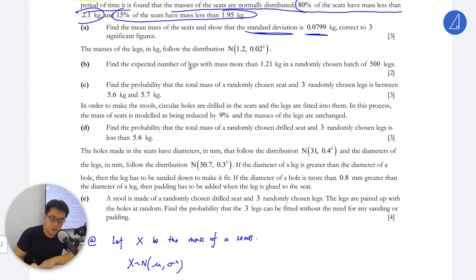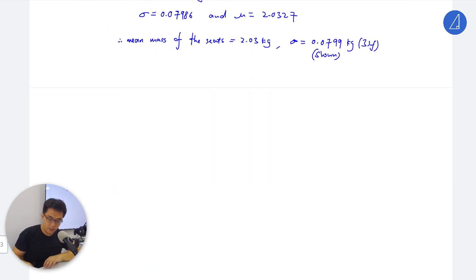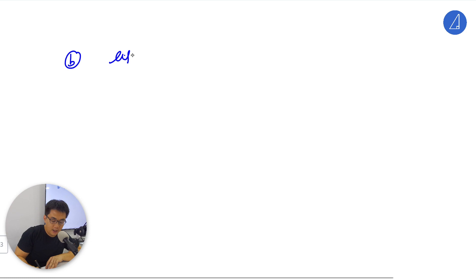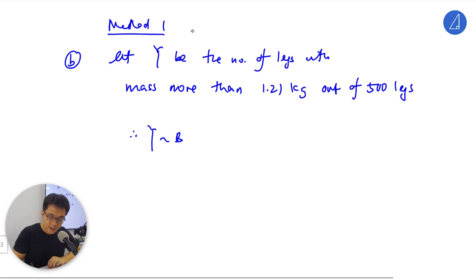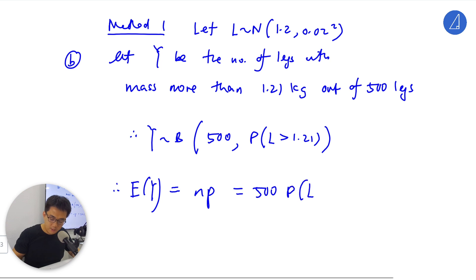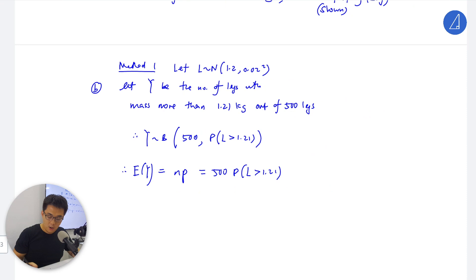Part B: expected number of legs with mean mass 1.21 kg in randomly chosen batch of 500 legs. You can see it as a binomial or weighted average. Let Y be the number, and let L be the leg, normally distributed with mean 1.2 and variance 0.02 squared. For 500 legs, we need P(L > 1.21). Hence, expectation of Y is N times P, which is 500 times P(L > 1.21).